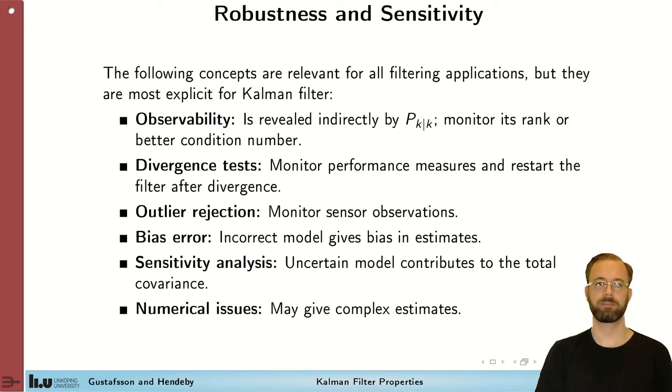Bias error, something that we get if the model is not correct. Sensitivity analysis is something else that's described in the book. It explains how you can see how sensitive the model is to the properties of it and what you might have to estimate. And finally, numerical issues.